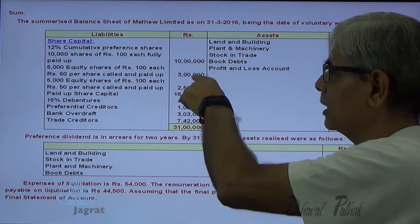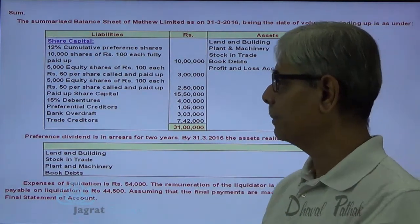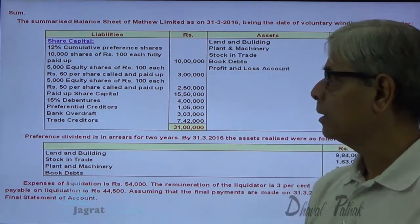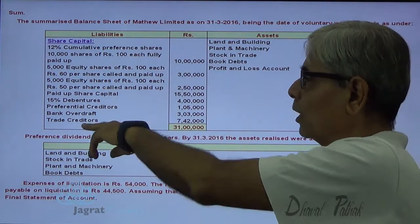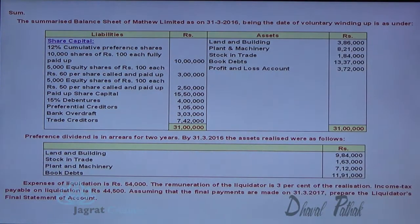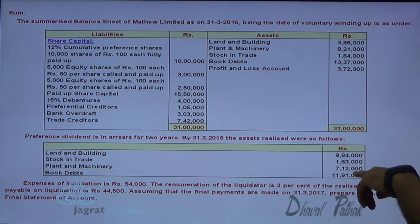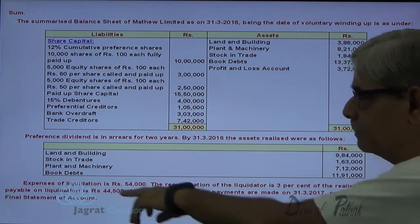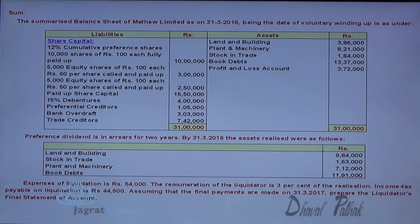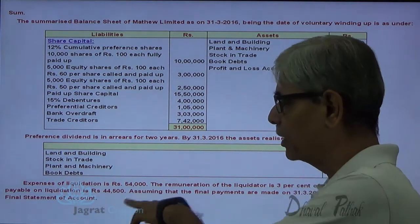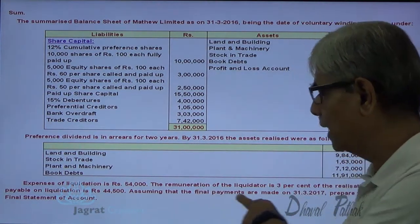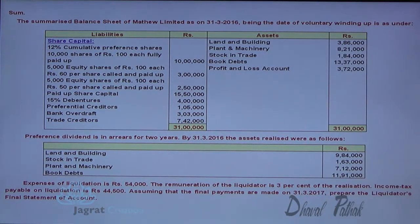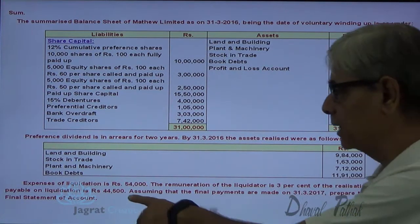15 lakh 50,000 is the total of these three numbers. Notice it — 15% debentures, preferential creditors, bank overdraft, trade creditors. The preference share dividend is in arrears for two years on 31st 2016. Assets realized as follows — this is the realized value of assets. Expenses of liquidation amounted to 54,000. Remuneration of the liquidator is 3% of the realization. Income tax payable on liquidation: 44,500. Assuming that the final payment was made on 30th month in 2017, prepare the liquidator's statement of accounts.